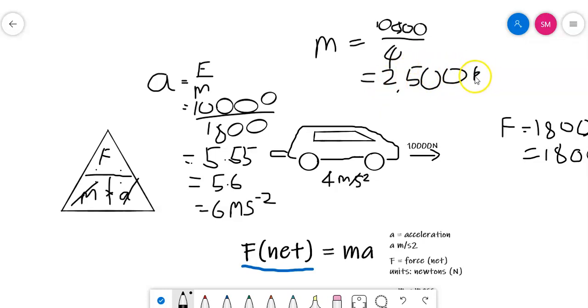Remember units are really important. 2,500 kilograms. So that is how to use F equals MA if you need to rearrange for M or rearrange for A.